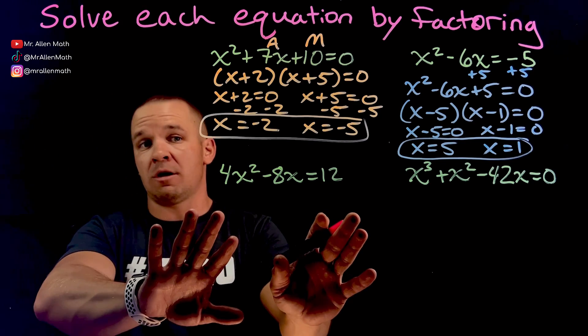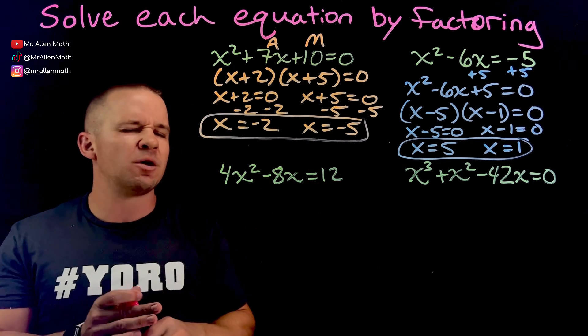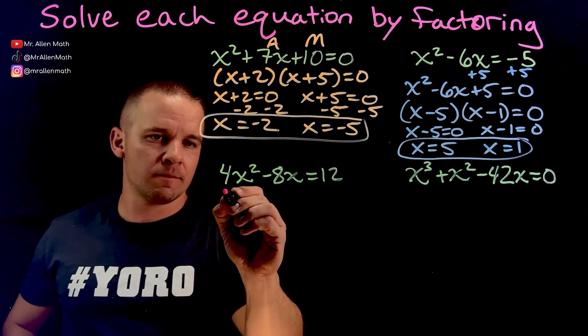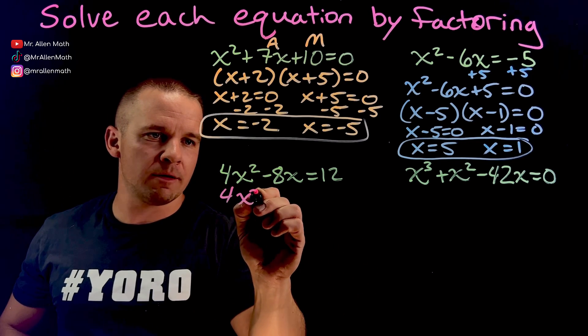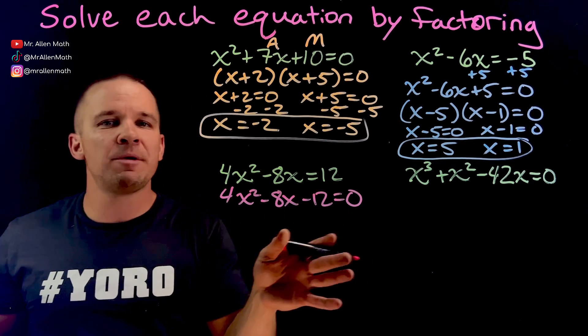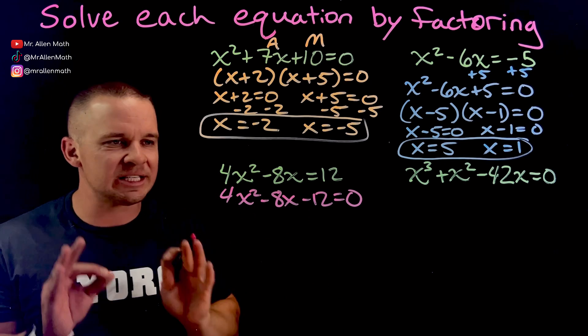All right. Now down to the one where we were very concerned, right? We're like, bro, how's that going to work? It's going to work. First thing I'm going to do here, I'm going to set this equal to 0. So we got 4X squared minus 8X minus 12 equals 0. Didn't have to be our first step, but I'm going to make it our first step because that's what we said all of our first steps were going to be. Consistency is key.